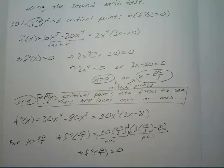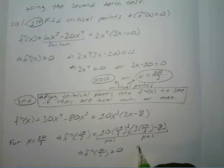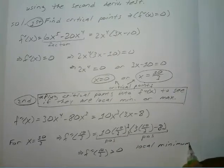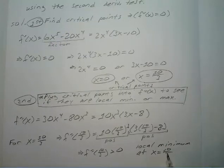So we know the second derivative at 10 over 3 is greater than zero. That tells us it's a local minimum at x equals 10 over 3.